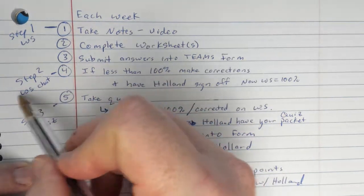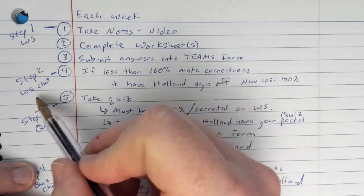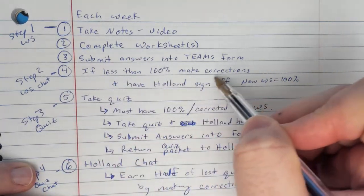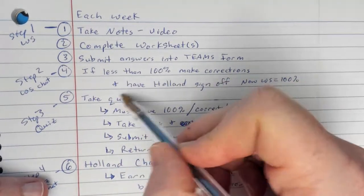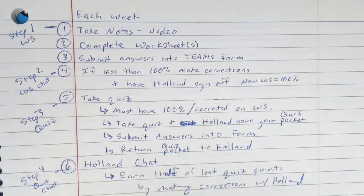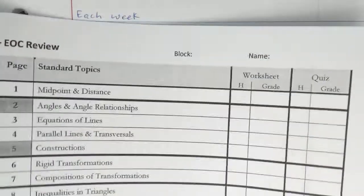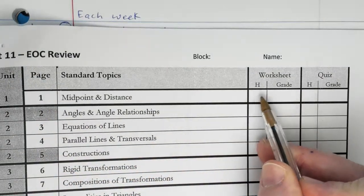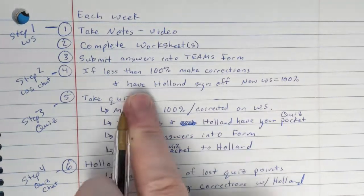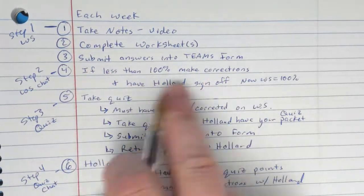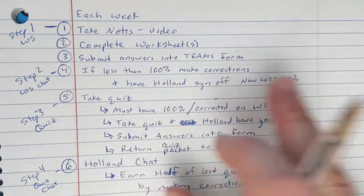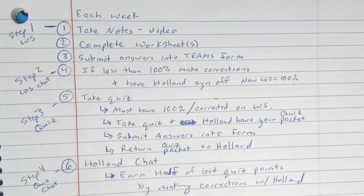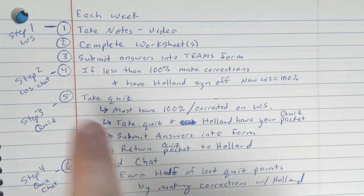Step two is your worksheet chat. You're going to chat about the worksheet with me. If you got less than a hundred percent, we need to make corrections. And then once you make those corrections and you've talked to me about it, I sign off on it. For instance, here's worksheet one, you got your grade, then you meet with me and I sign off on it. Now that worksheet is now a hundred percent. Now that we've had a chat and I agree that you understand how to do it.